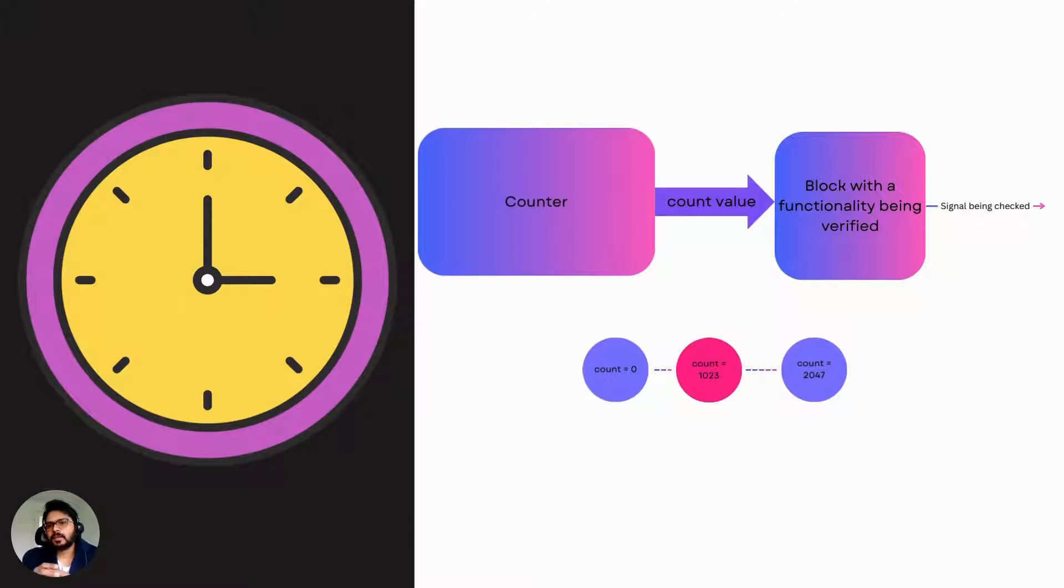In RTL designs, we have so many such cases where a counter, which is analogous to the timer we just discussed, needs to reach a particular value to trigger certain functionality. If the out of reset value of that counter is zero and the value at which the functionality you're interested in verifying gets triggered is 1023, every single counter example will have at least 1023 clock cycles because the counter will have to get out of reset and count from 0